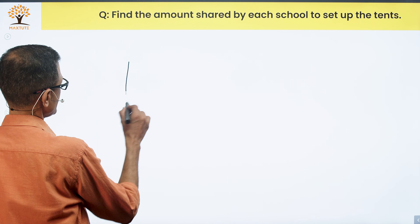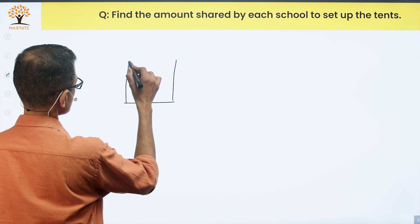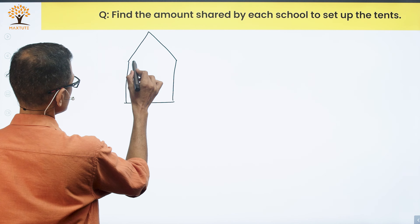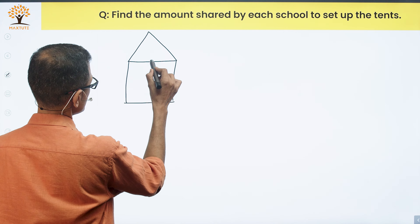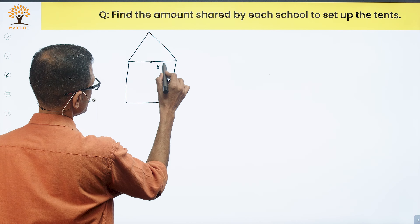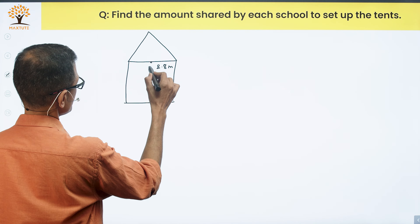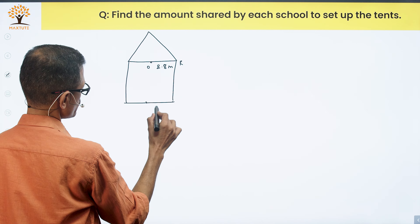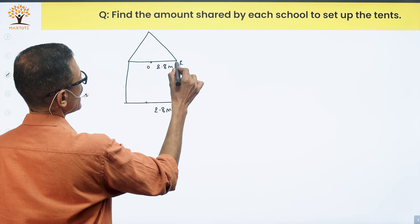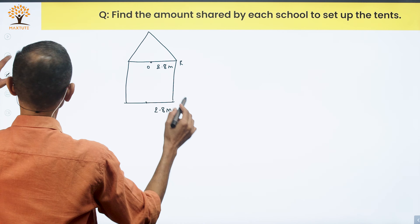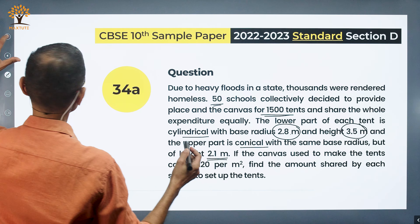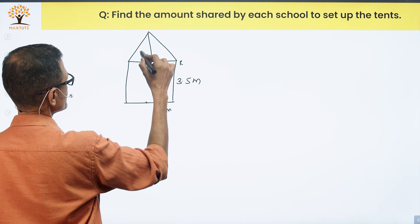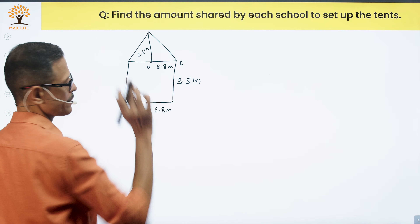Let's quickly look at how the tent is going to look. The base is a cylinder, and on top we have a conical section. The radius — call it OR — is 2.8 meters, the same for both the cylinder and the cone. The height of the cylinder is 3.5 meters, and the height of the cone is 2.1 meters.